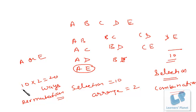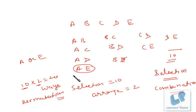So to summarize: combination is done first — that is to select only. Permutation is to select and then arrange. Combination = select only; permutation = select and arrange. Now let's derive the formula for the same.